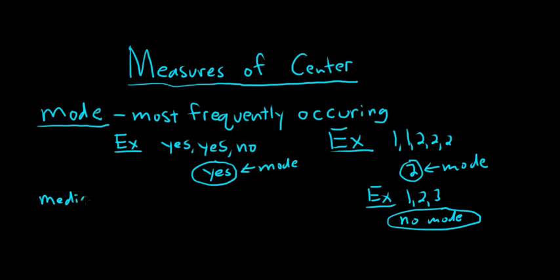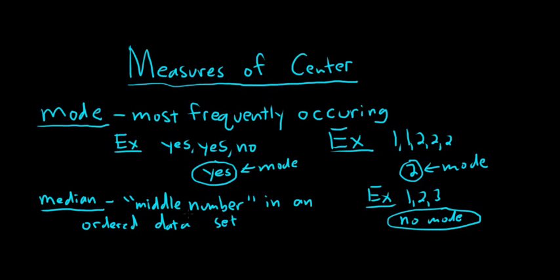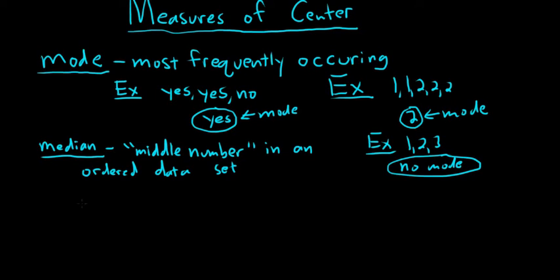Then we have what's called the median. The median is the middle number in an ordered data set. I'm going to put that in quotes because not every data set technically has a middle number. Let's do a couple simple examples. Say you had the ordered data set 1, 2, 3, 4, 5. This is an ordered data set. And the middle number in this case looks like it would be 3. 3 would be the middle number because here you have 1 and 5 and 2 and 4. That's the median. Your median, in this case, is equal to 3.